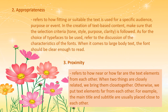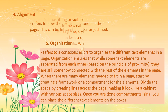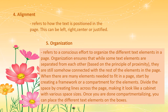Number three — proximity refers to how near or far the text elements are from each other. When two things are closely related, we bring them close together; otherwise, we keep elements apart. For example, the main title and subtitle are usually placed close to each other. Number four — alignment refers to how the text is positioned on the page. This can be left, right, centered, or justified.